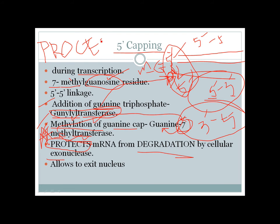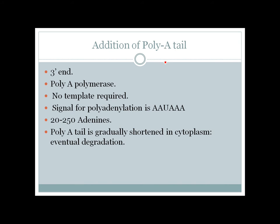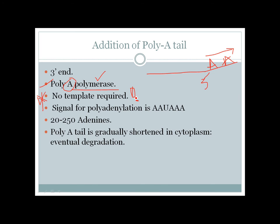Five prime capping is for protection — you don't want the coding mRNA to be broken down, leading to a non-functional or truncated protein. Now, the next process at the three prime end is addition of the poly-A tail, or poly-adenine tail. This is mediated by poly-A polymerase — it's called a polymerase because it adds many adenines.